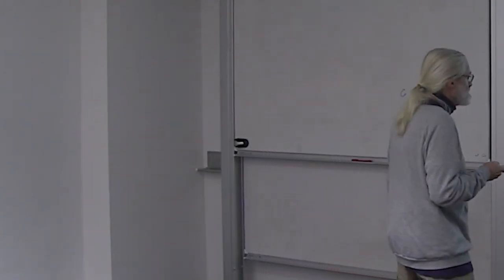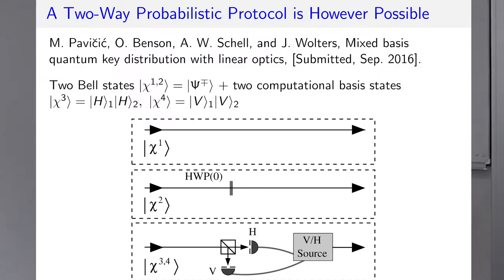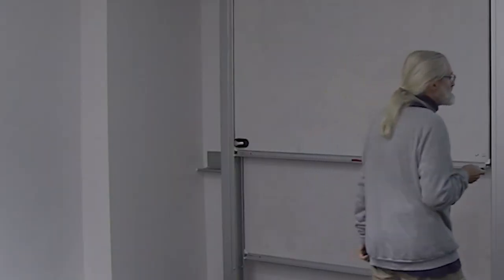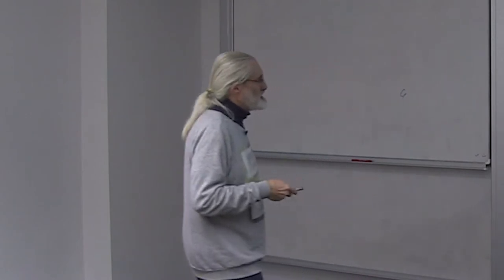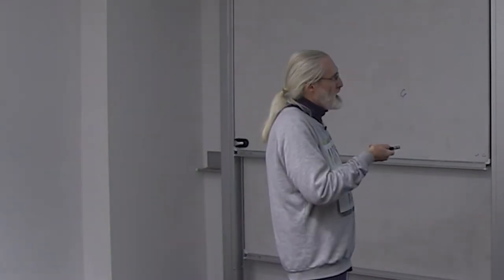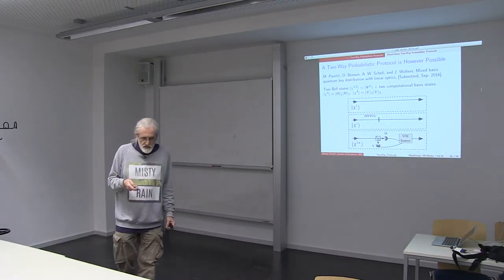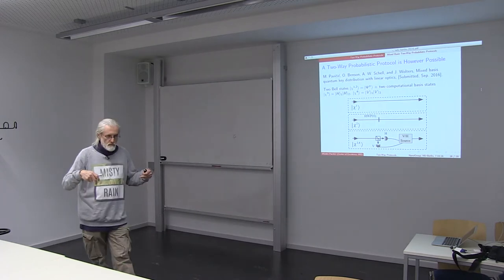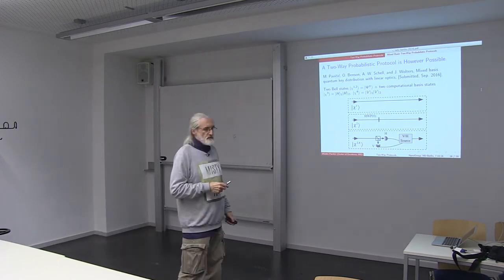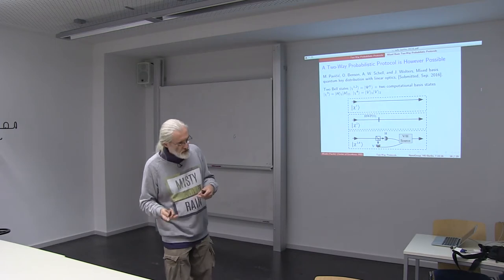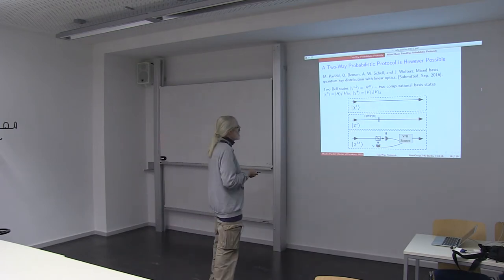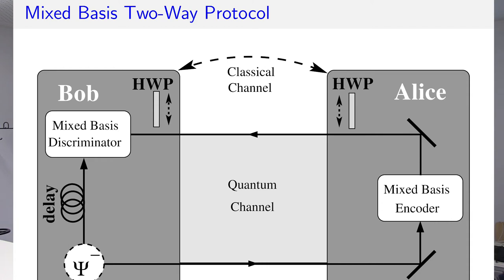Because we use entangled photons and then let one of the photons - Alice does that - through a polarizing beam splitter, and in that way we collapse the other photon to the same state, the Bob's photon. It is interesting here that it doesn't matter whether Alice obtained horizontal or vertical polarization, which are completely random and which she cannot control.